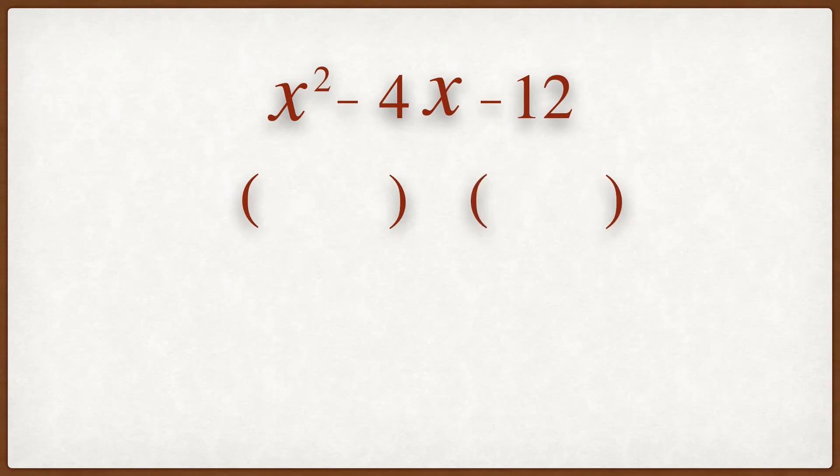We look for the terms that multiply to give you x squared. x times x gives x squared, therefore we start with x in each bracket.